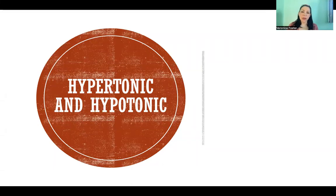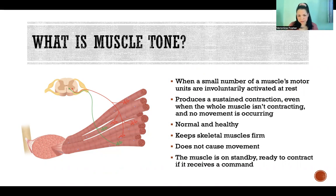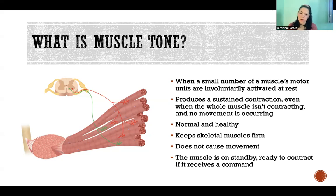Hello. In this video, I'm going to explain the terms hypertonic and hypotonic. To understand hypertonicity and hypotonicity, you first need to understand what muscle tone is. In our common language, we talk about working out to get more muscle tone, but that's not at all what it means in physiology. Muscle tone physiologically is a small amount of motor activation — a small number of muscle motor units that are involuntarily activated while we are at rest.